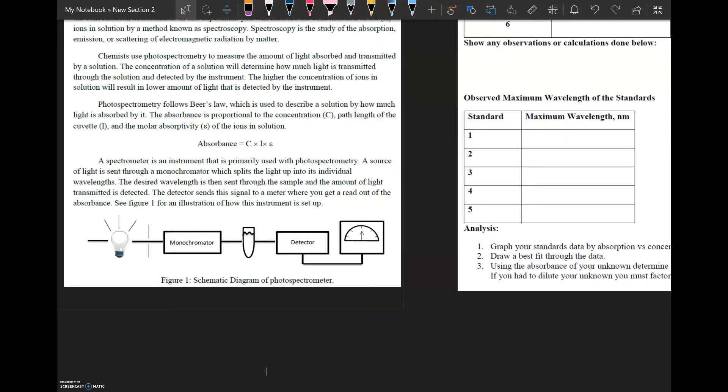When we talk about solutions, there are some solutions that have color in them. Copper 2 has a specific color to it. In fact, copper 2 has a blue color to it. And so what we're going to observe in this particular experiment is how the dilution of the copper 2 solution affects the absorbance that is measured.